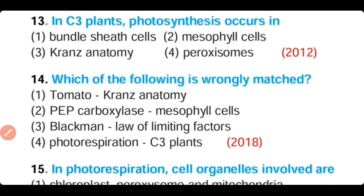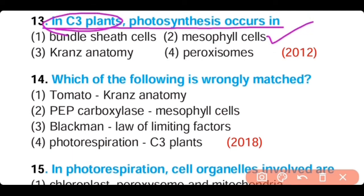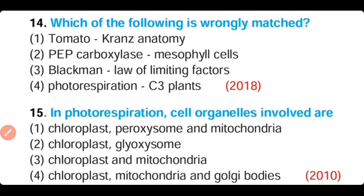Question number 13. In C3 plants, photosynthesis occurs in: bundle sheath cells, mesophyll cells, Kranz anatomy, or peroxisome. The correct answer is option 2. In C3 plants, photosynthesis occurs in mesophyll cells.